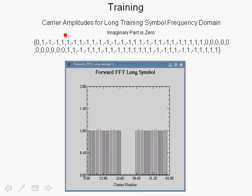Here we will examine the actual long training sequence. The long training sequence is derived by taking the inverse Fourier transform of the following sequence. Note that the magnitude is always 1 or minus 1, and the imaginary part is set to 0.